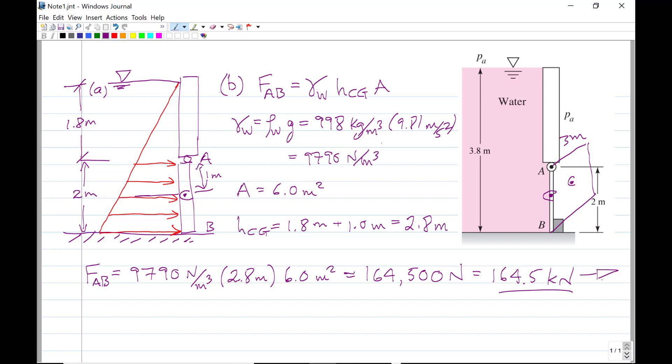And of course, it acts to the right. We can see that from the pressure distribution. Make sure when you're drawing these, if you're drawing them on a midterm, that you show that the pressure vectors are perpendicular to the surface. So the next part of the problem is to find the center of pressure, or the line of action. It always acts below the center of area. We need to find out what that distance is.